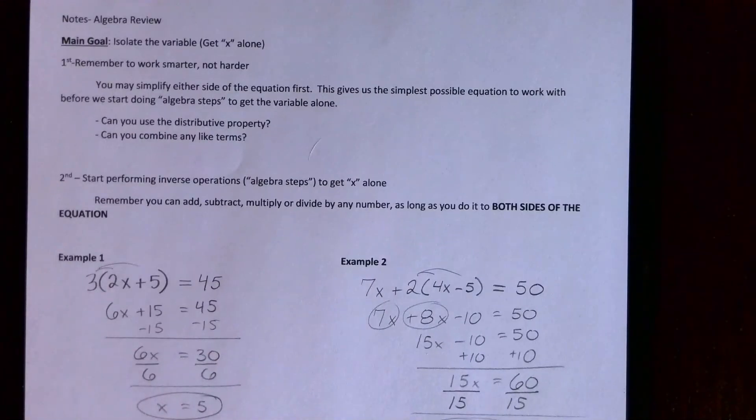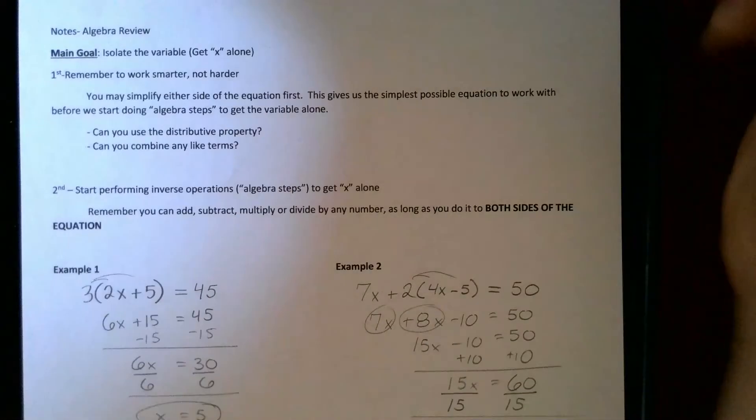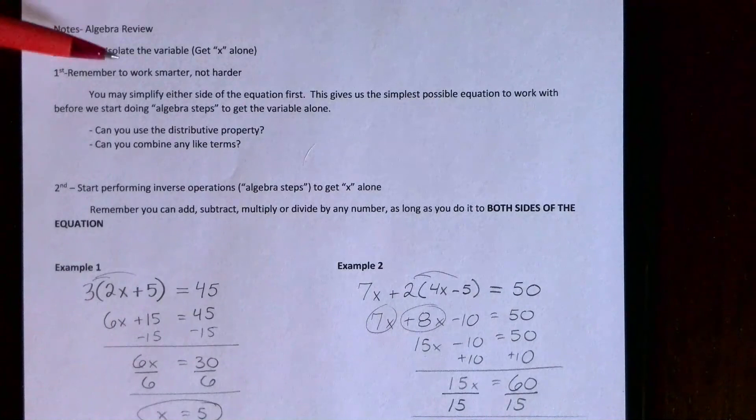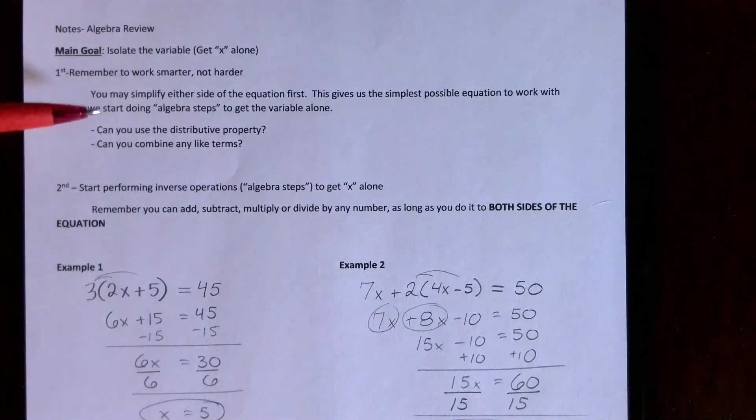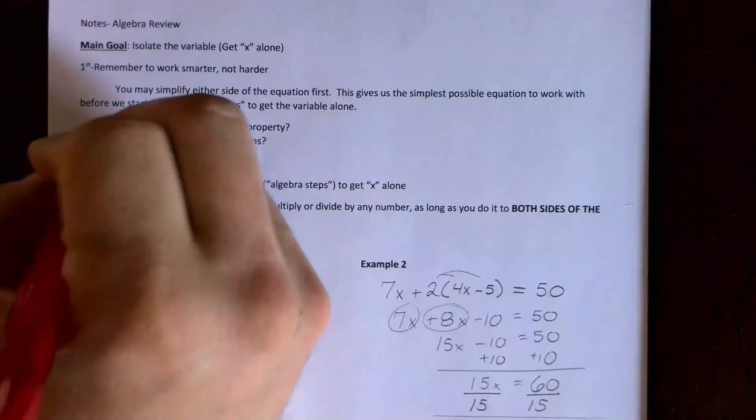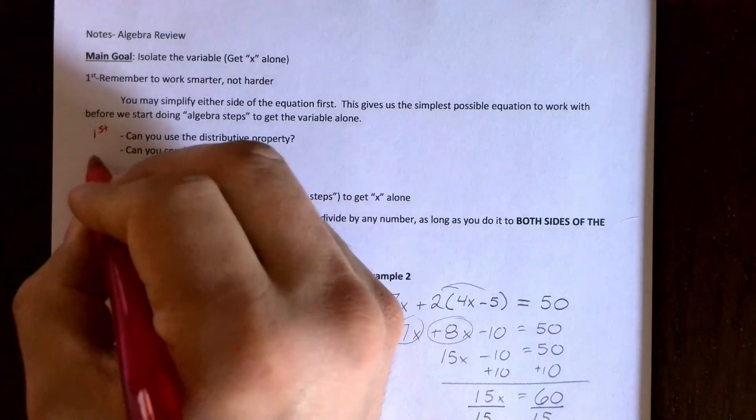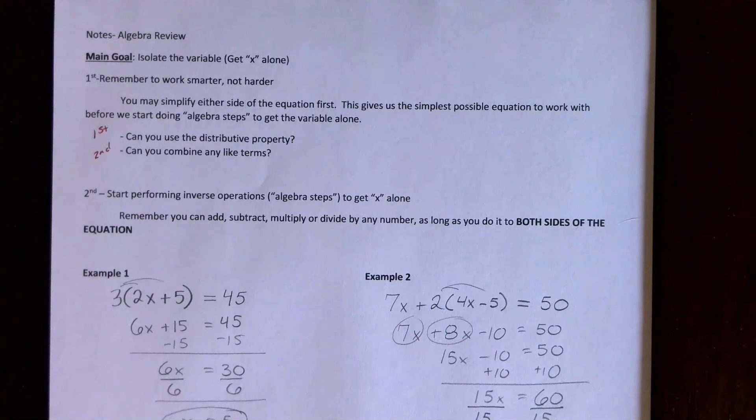All right, let's move on to page 2 notes. I got most of the notes here for you. Algebra review: remember our main goal with algebra is to get x alone, isolate the variable. Two main rules. The first, remember work smarter not harder, is that you may simplify either side of the equation first. This gives us the simplest equation possible before we start actually doing the algebra. Why would we want to do algebra on a really hard looking equation if I can simplify it first and do algebra on an easier equation? The two ways we have here: first look to do the distributive property, and then second is there any like terms to combine. Sometimes the answer could be no to one or both of those questions and that means you're already simplified or partially simplified.